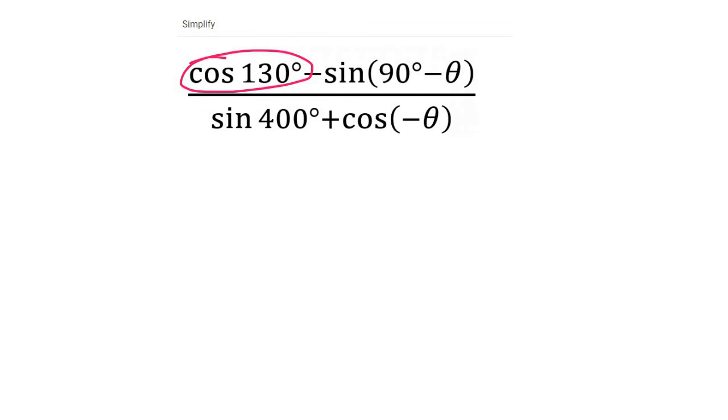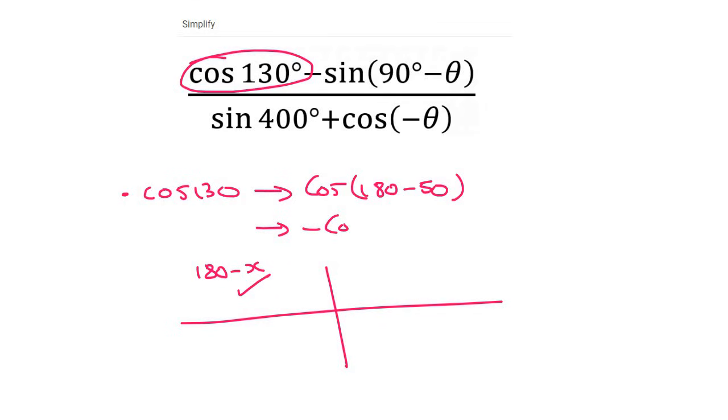So with cos 130, I'm going to show you each one separately. The angle 130 is in quadrant 2. In quadrant 2, we write it as 180 minus x. So we convert this into 180 minus 50, because that is still 130. We haven't really changed anything. And we know that cos is negative in that quadrant, so that just becomes negative cos 50.